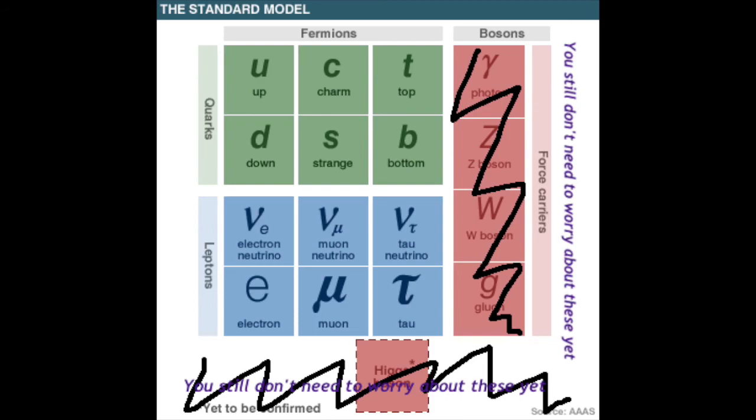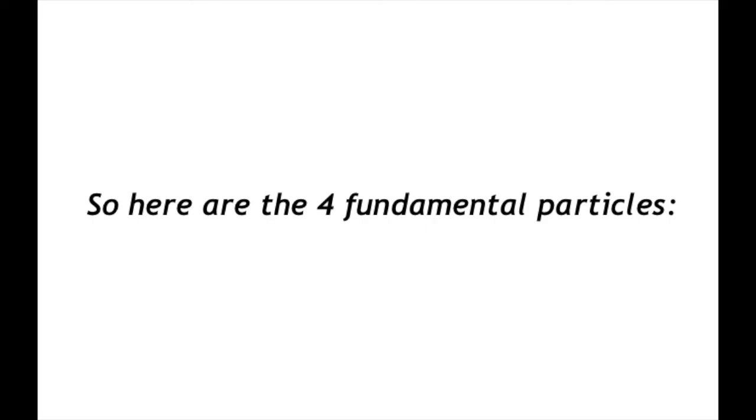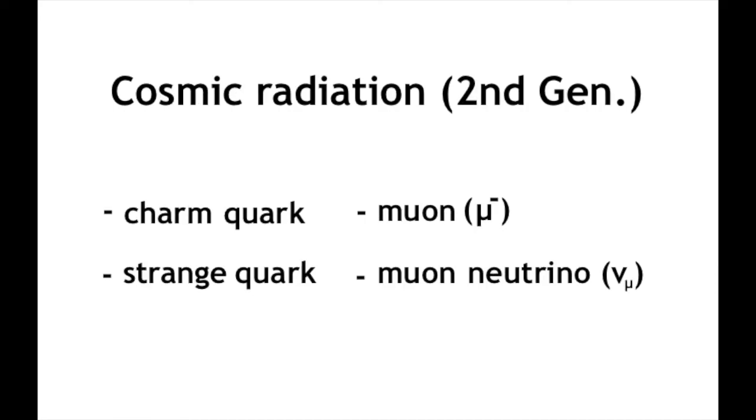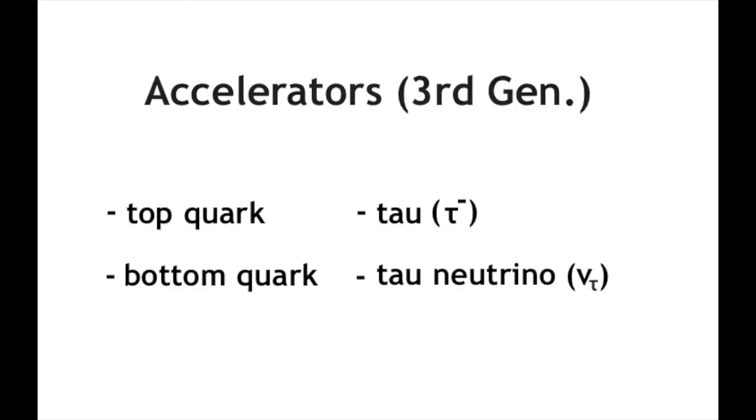And that's it for the standard model for quarks and leptons, which are classified as fermions. So here you have the four fundamental particles for each generation. First generation: up quark, down quark, electron, electron neutrino. Second generation: charm quark, strange quark, muon, and muon neutrino. Third generation: top quark, bottom quark, tau, and tau neutrino.